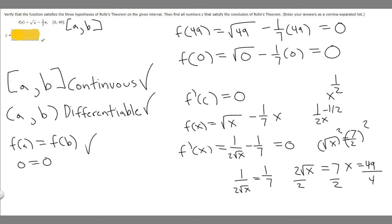So this is going to be our x value, but what we're solving for is basically c. So we know that c is going to be equal to 49 over 4. So the answer to this problem is going to be 49 over 4.